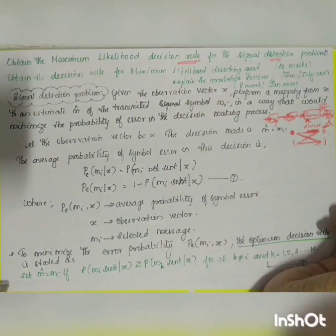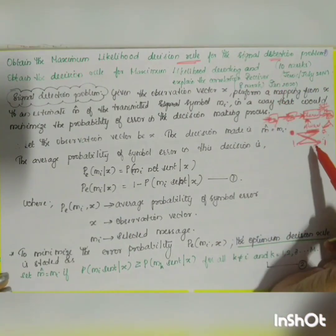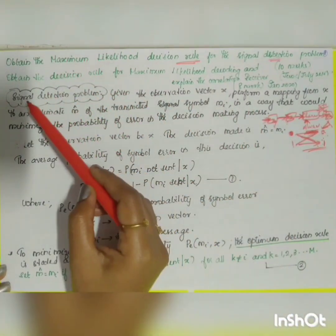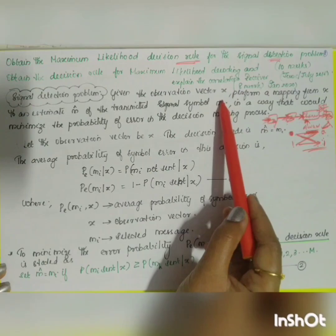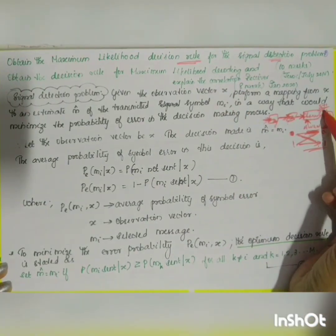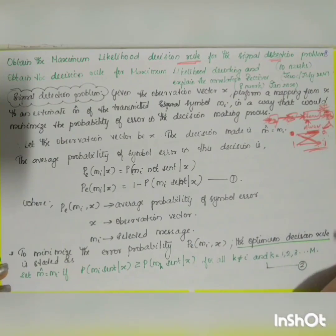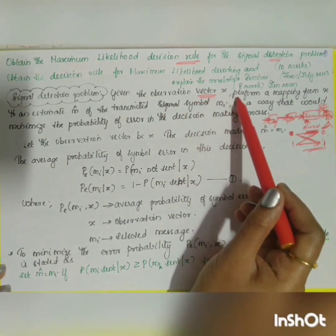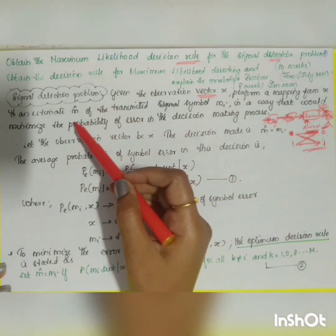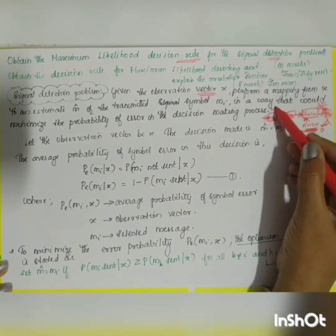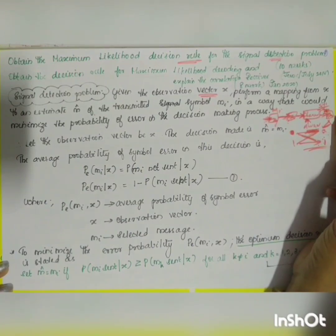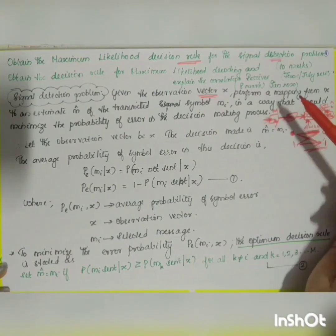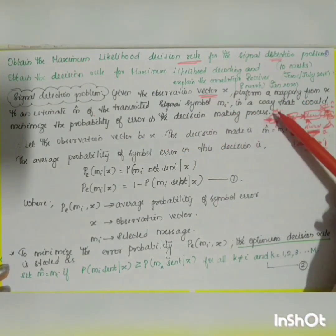The main use of this decision rule is to reduce the probability of error. For the signal detection problem, given the observation vector x — which is a mix of both signal and noise — we perform a mapping from x to an estimated value m-hat of the transmitted symbol mi, in a way that minimizes the probability of error in the decision making process.